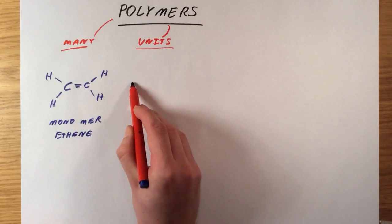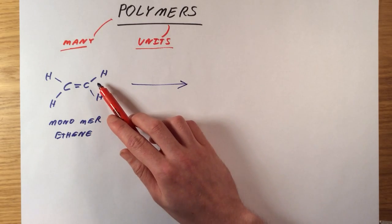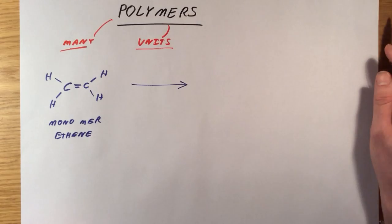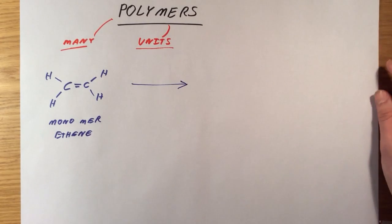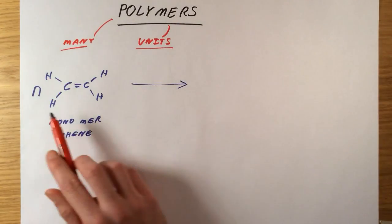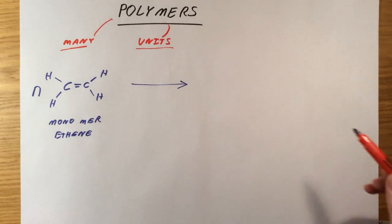If I was going to turn this into a polymer, I can't just have one molecule because I've got nothing to chain it to. What I need is a very large number of those molecules. The way I represent that is just to use a letter N. I'm going to start off with N ethene molecules, or monomers.